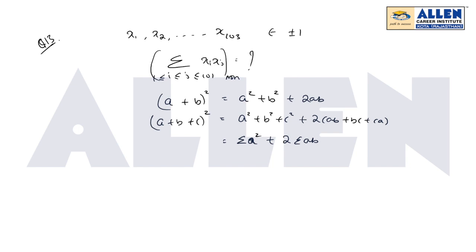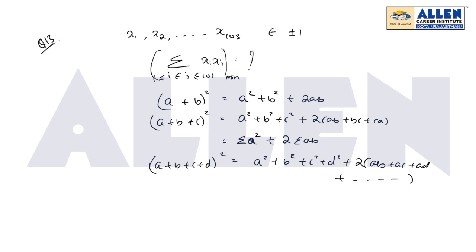When the terms become 4, again (a+b+c+d)² = a² + b² + c² + d² + 2 times all possible combinations of a and b taken 2 at a time, that is 4C2 terms. So we can generalize this formula: (summation of a)² equals summation of a² plus twice the summation of ab.